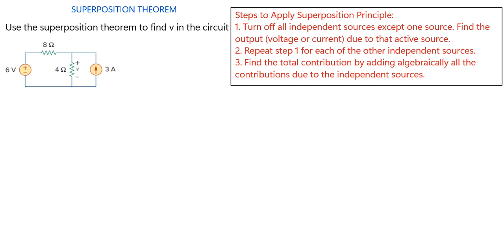I will explain to you the steps involved in using the superposition theorem to find the voltage drop across an element in a circuit. I have this question here: using the superposition theorem, find V in the circuit, which is the voltage drop across the 4 ohms resistor. Let's look at how we are going to solve this question.